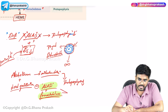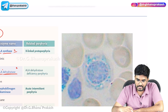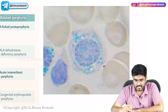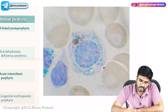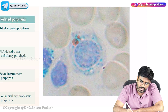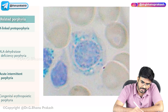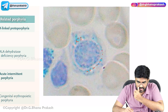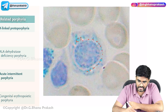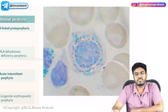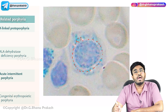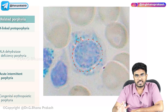Looking at the bone marrow under the microscope, we can see immature cells (sideroblasts). The blue color visible represents iron accumulating in these cells. The iron accumulates in a ring shape around the nucleus — hence these are called ringed sideroblasts.